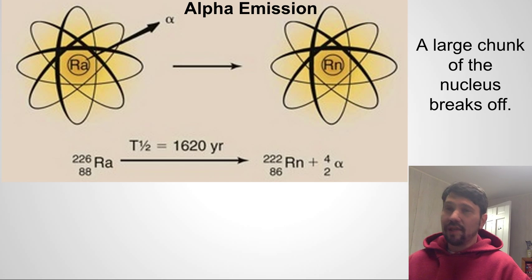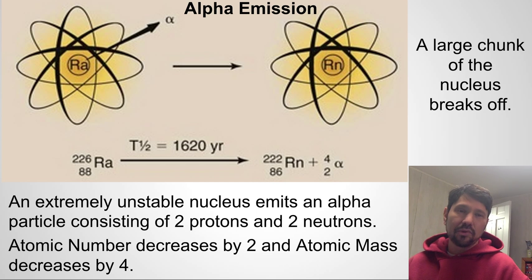Our next form of particulate radiation is the alpha emission, and this has to occur from a more unstable nucleus, a larger nucleus, and this is when a large chunk of the nucleus breaks off. So in this case, an extremely unstable nucleus emits an alpha particle, and that alpha particle consists of two protons and two neutrons. And as we see, radon transforms, and we've gone from an atomic number of 88 to an atomic number of 86, because we've lost two protons. And we've also gone from an atomic mass of 226 down to 222, because we've lost four nucleons, two neutrons and two protons. And we see the emission of an alpha particle, which is identical to a helium atom, except it's got no electrons. A helium atom would have two protons and two neutrons, but it would also have two electrons orbiting it.